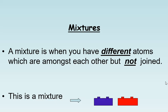Finally, mixtures: a mixture is when you have different atoms and they are amongst each other, but they are not joined. So this is a mixture—we have a blue atom, we have a red atom, but they're not joined.